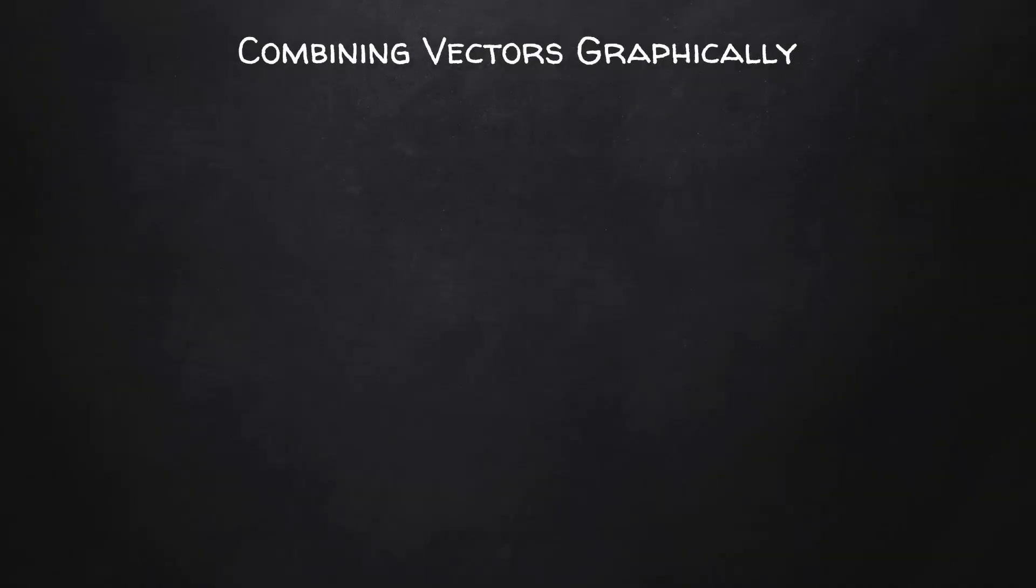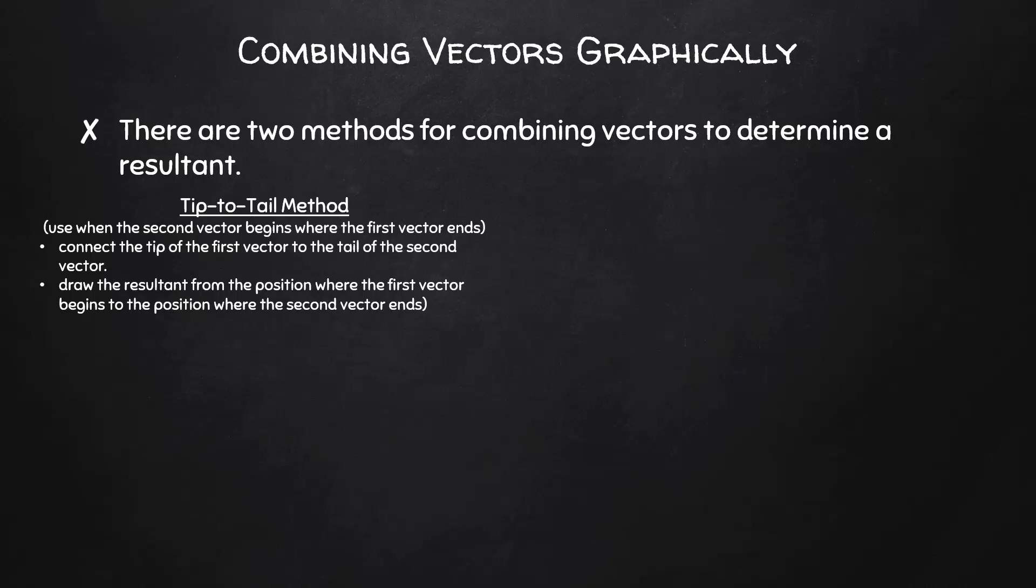When we are combining two vectors that are not in the same dimension, we'll use a diagram to determine their resultant. There are two methods for doing this. The first is commonly called the tip-to-tail method. I'll use this method when the second vector begins where the first vector ends.